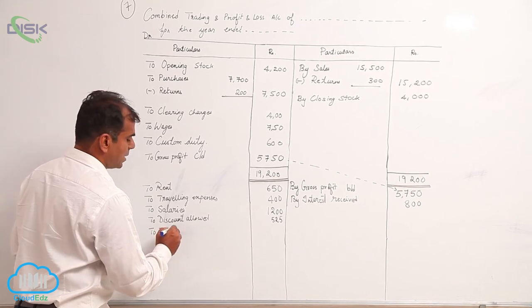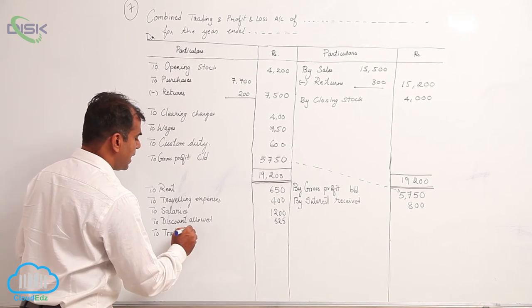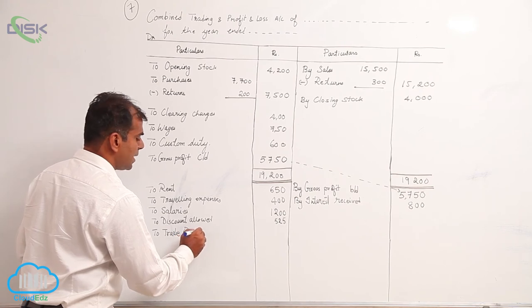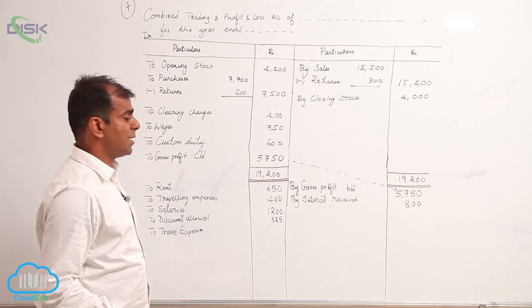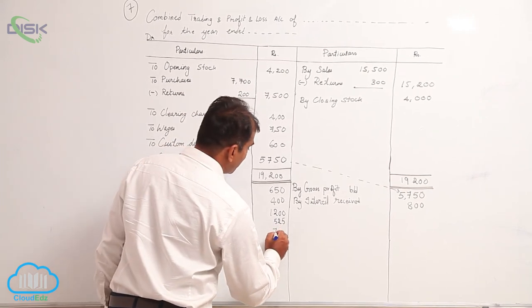Now next item is trade expenses. Do not mistake the word 'trade' to mean it should come in trading account. Trade expenses will be coming in your P&L account, the amount being 700.